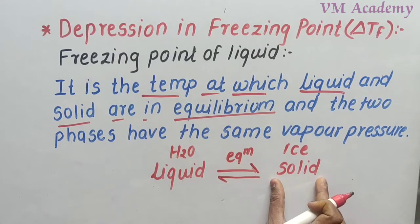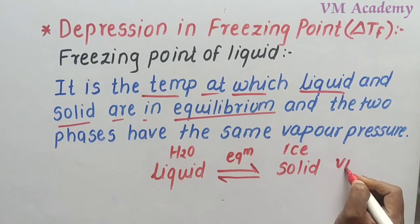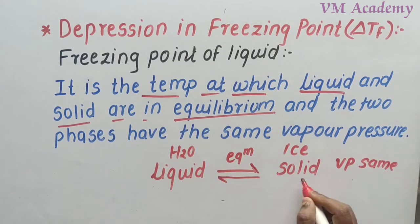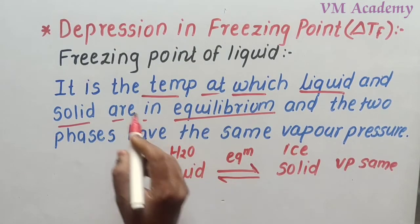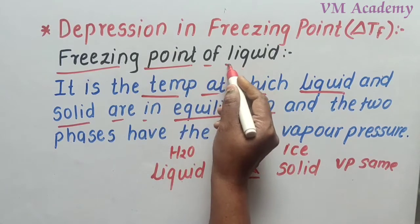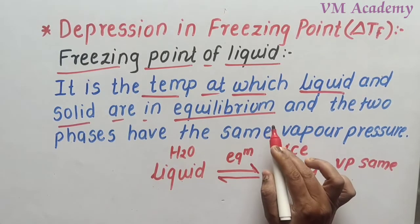For water, liquid H₂O converts to ice. So liquid form converts to solid form, and at the same time solid form converts back to liquid form. When equilibrium is reached — meaning as many liquid particles converting to solid as solid particles converting to liquid — the vapor pressure of both phases will be the same. That point is called the freezing point of that liquid.